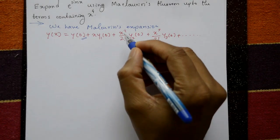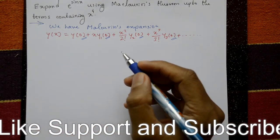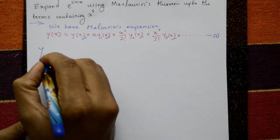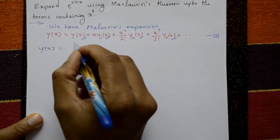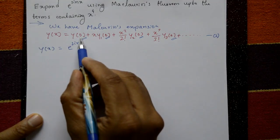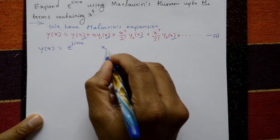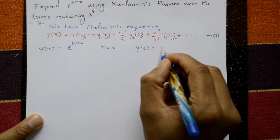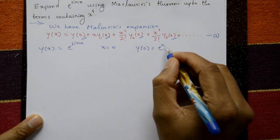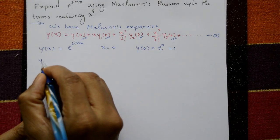We require y(0), y1(0), y2(0), y3(0), and y4(0), then substitute into equation number 1. Given y(x) = e raised to sin x. First, find y(0): put x = 0, so y(0) = e raised to sin 0. Since sin 0 = 0 and e raised to 0 = 1, y(0) = 1.